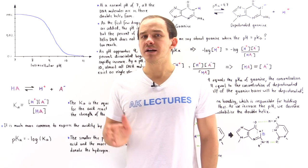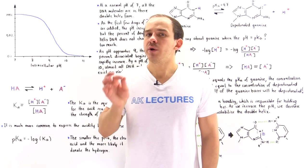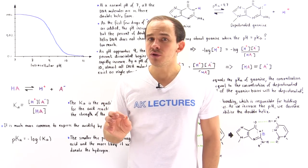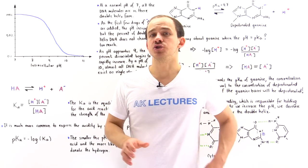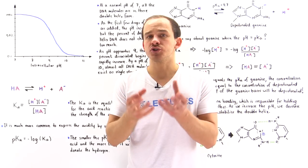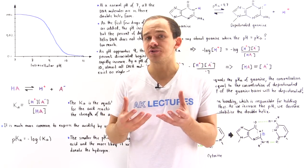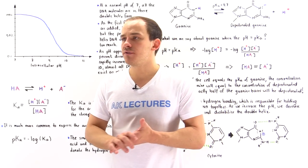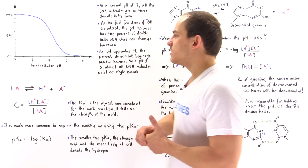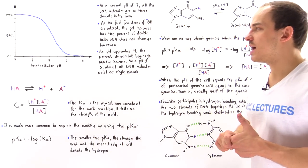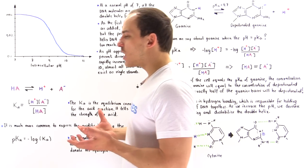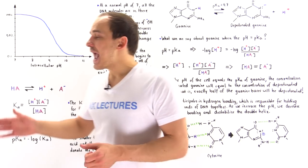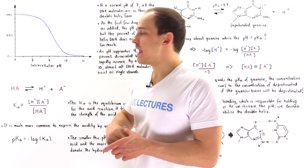What we're going to focus on in this lecture is how increasing the pH inside the nucleus of the cell actually changes the structure of the DNA — how it affects the double helix structure of the DNA and the formation of the double helix. Let's begin by looking at the following diagram that describes the relationship between the pH change and the structure of our DNA.